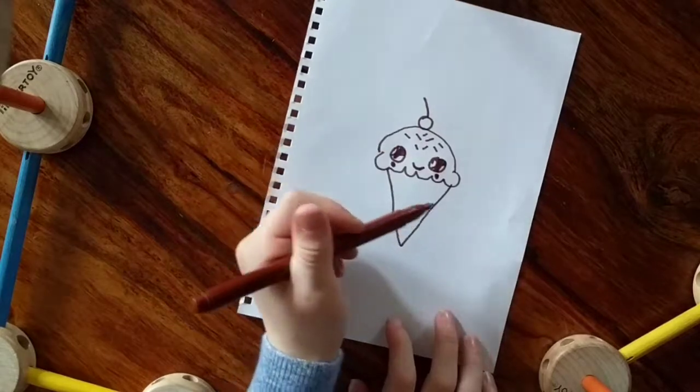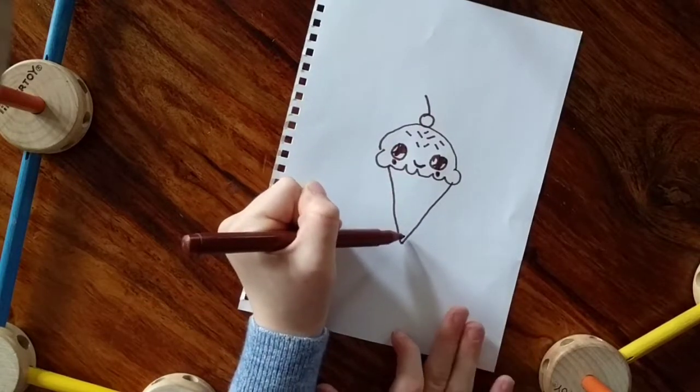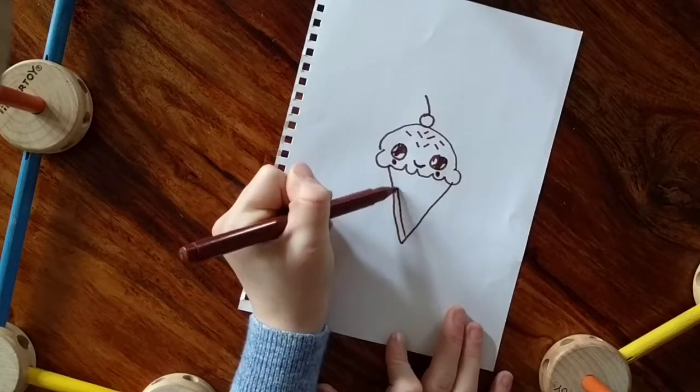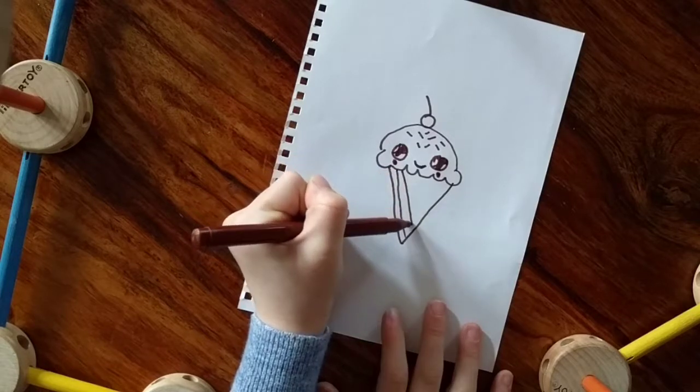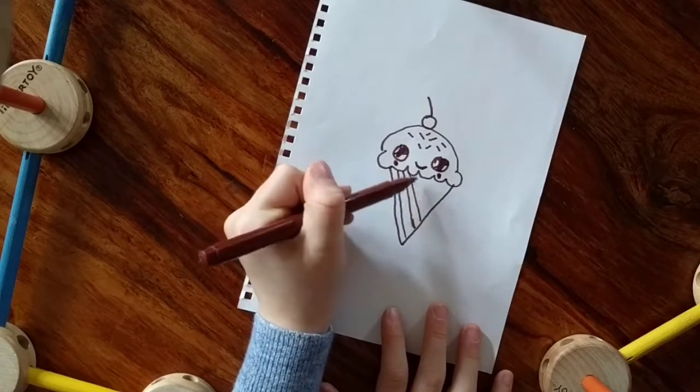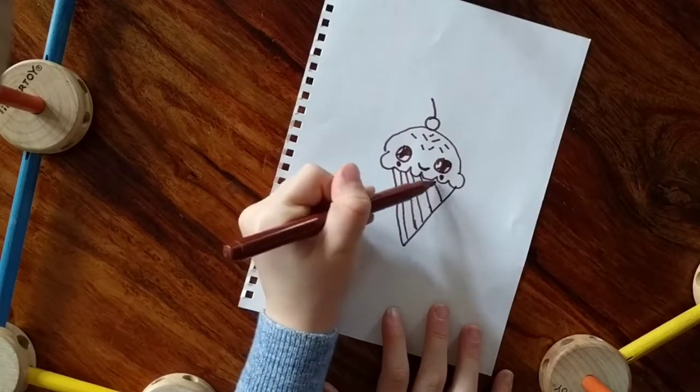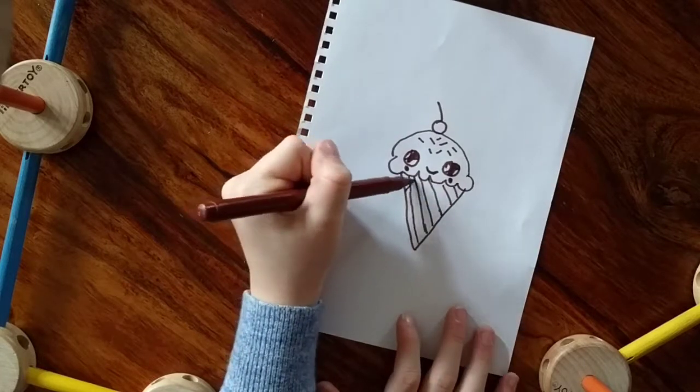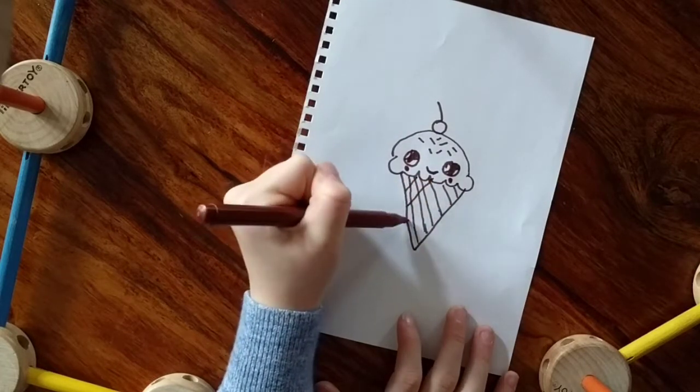Last thing we're going to do is some lines on the ice cream cone. So you're just going to continue drawing lines inside. Diagonally like this. And then you're going to do the other way. And it should look like this.